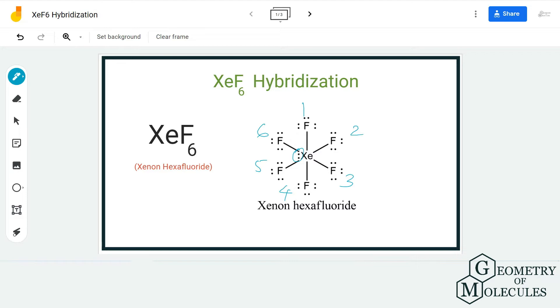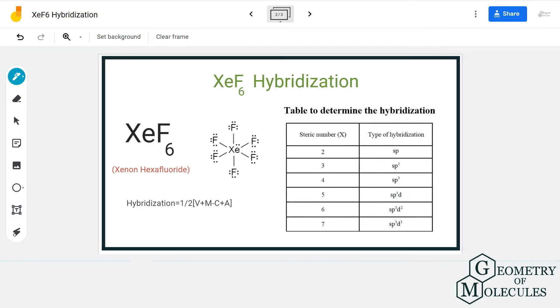So once you know this information about the molecule, it becomes really easy to find out its hybridization. Hybridization can be easily determined if you know the total number of electron regions around the central atom.